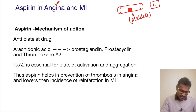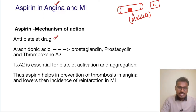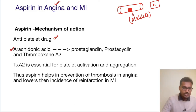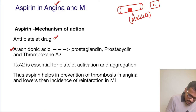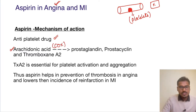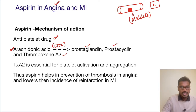So what is the mechanism of action of aspirin? Aspirin acts like an anti-platelet drug. There is a fatty acid in all of us called arachidonic acid. Whenever there is presence of an enzyme called cyclooxygenase — also called COX enzyme — this arachidonic acid can be converted to prostaglandin, prostacyclin, and thromboxane A2.